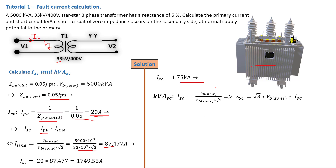Instead of using I_line, we now use I_sc; instead of S_B_new, we use S_sc. Rearranging: S_sc = √3 × V_B_zone × I_sc. Substituting our primary voltage V_B_zone and the short circuit current we calculated, we can now solve for S_sc.